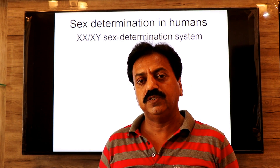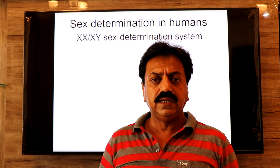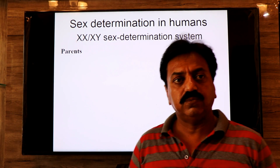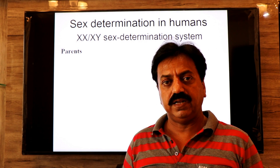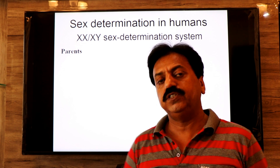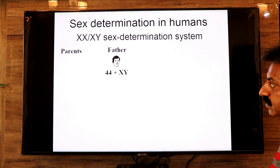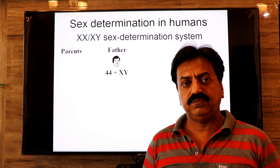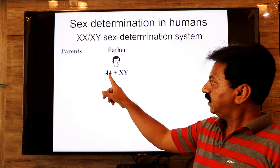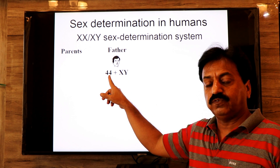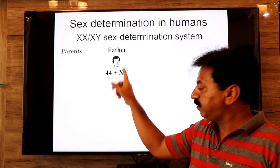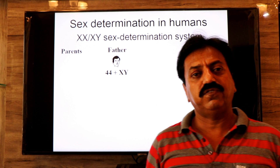In sexually reproducing organisms, one parent is male and the other is female. In human beings, both father and mother are diploid individuals. The father has 46 chromosomes total — 44 autosomes (22 pairs) and the 23rd pair is the sex chromosome, with one X chromosome and one Y chromosome.